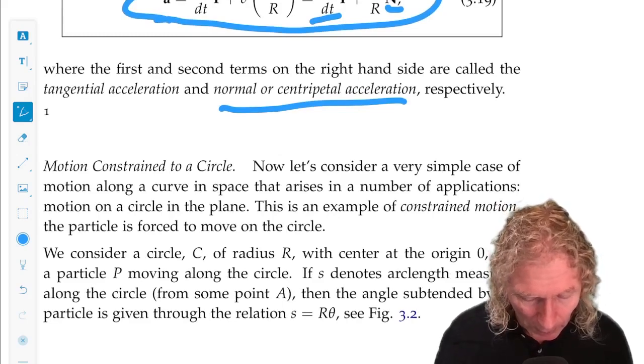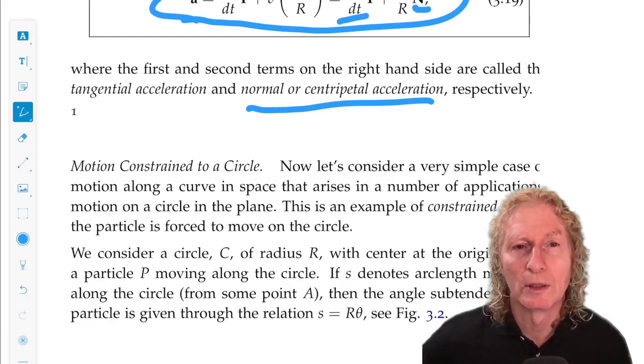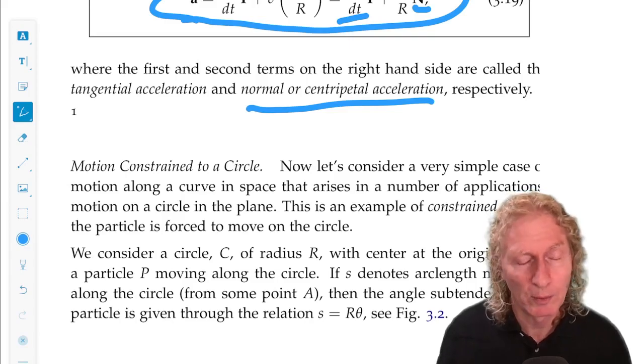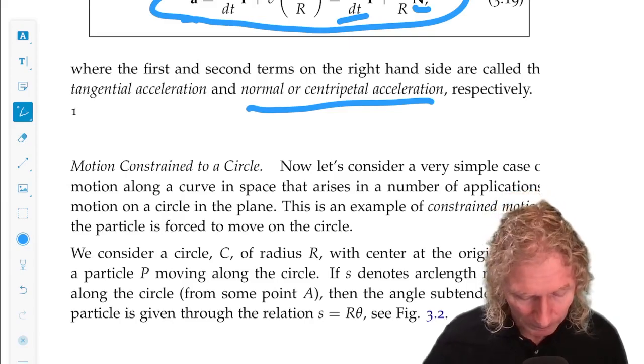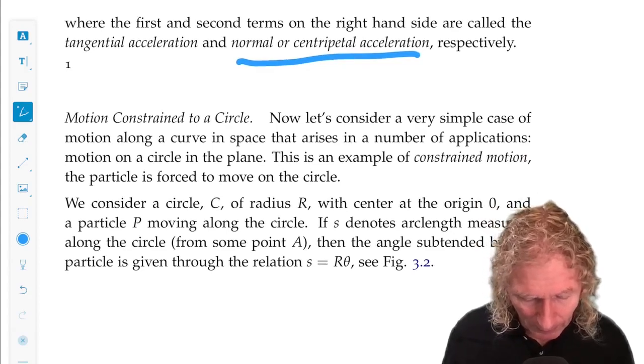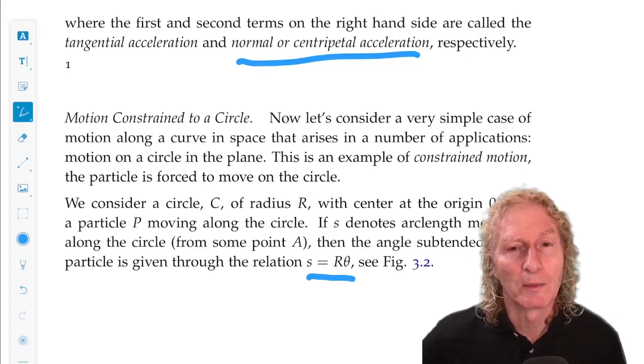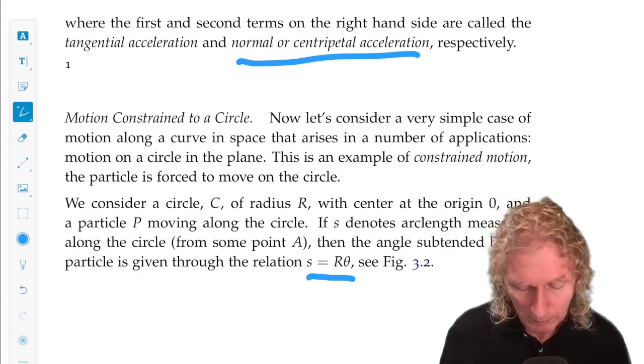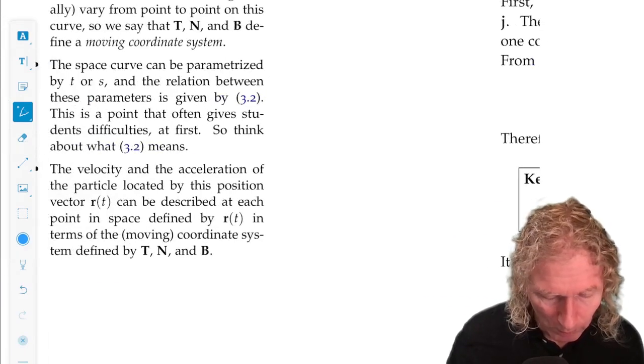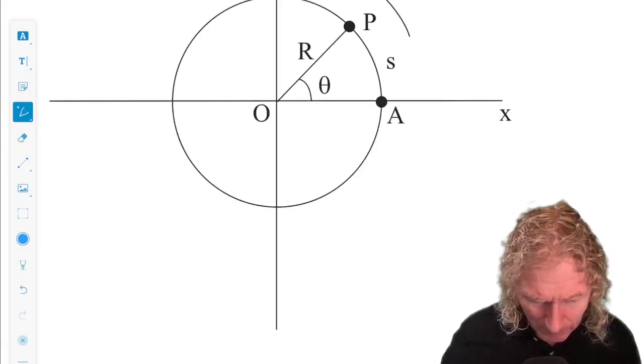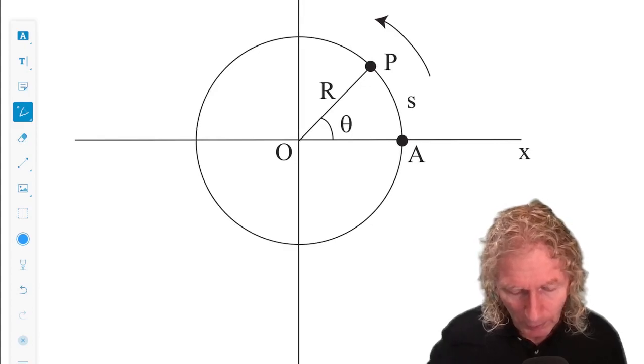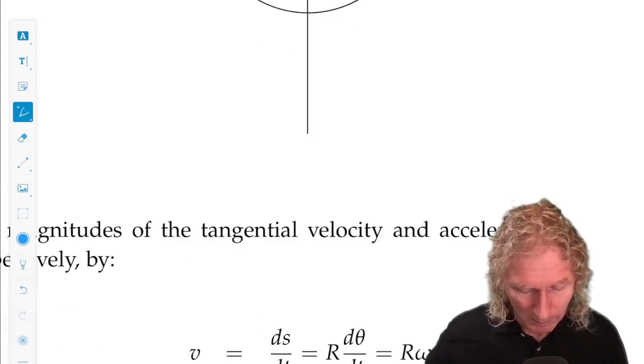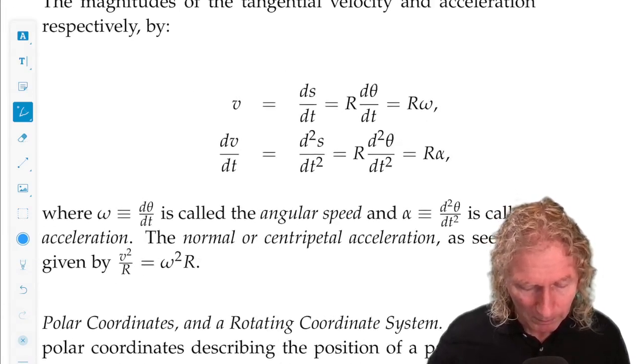Now, if we look at the situation of a motion constrained to lie on a circle, a particle that has to be on the circle, its radius cannot vary, in other words, we know what the arc length is in that case. The arc length is r times theta, where theta is measured from some reference point. So if we look at the usual picture that we have, in the plane, a circle of radius r, theta is measured from the horizontal axis, then arc length is r theta, and then we can compute these quantities, the velocity and the acceleration.